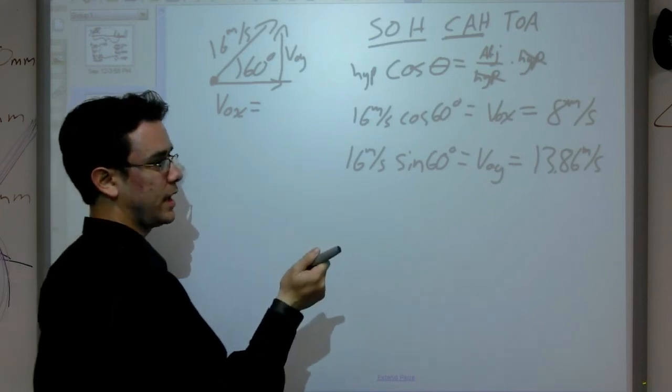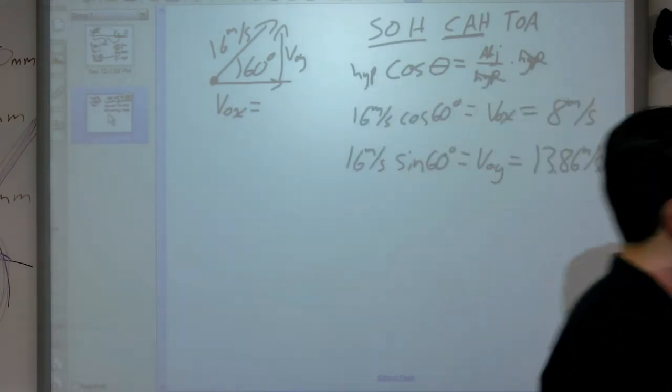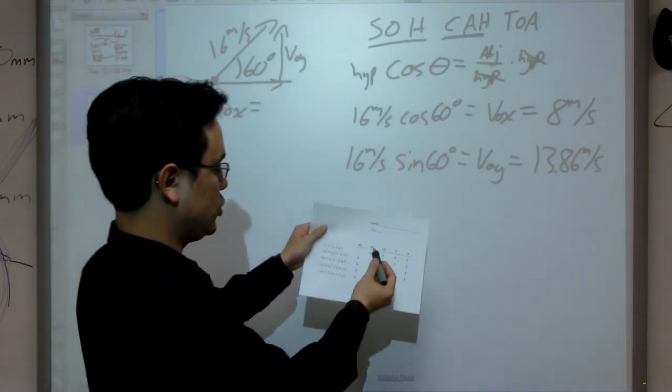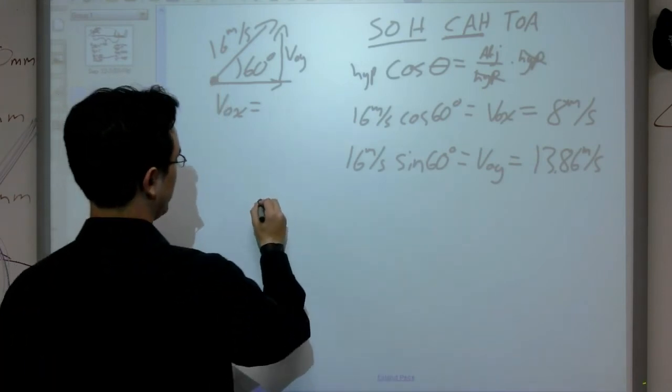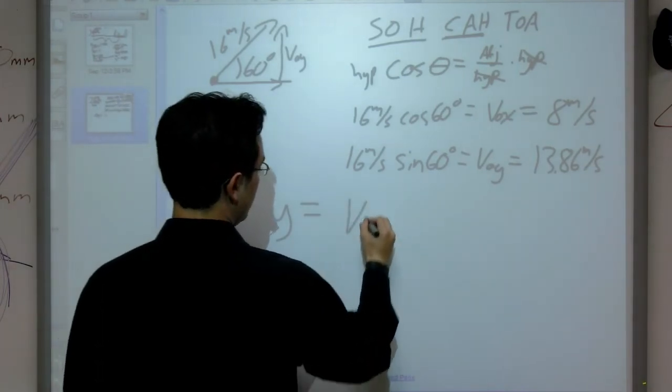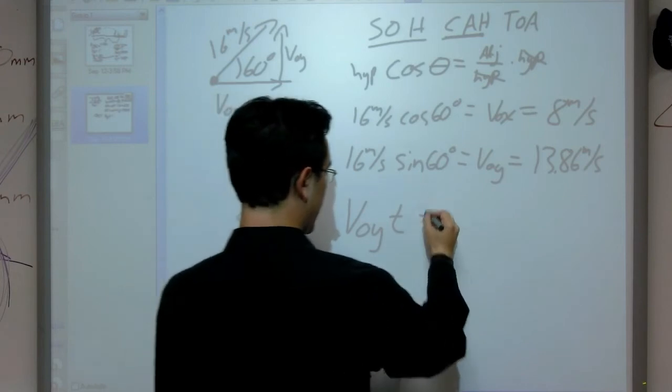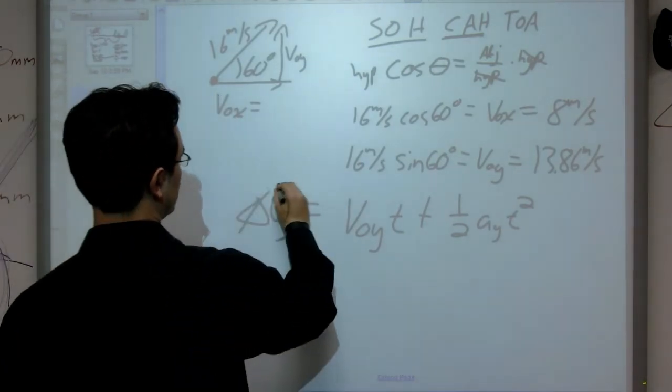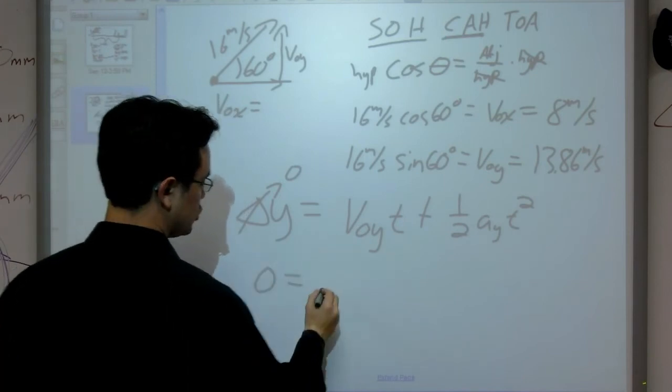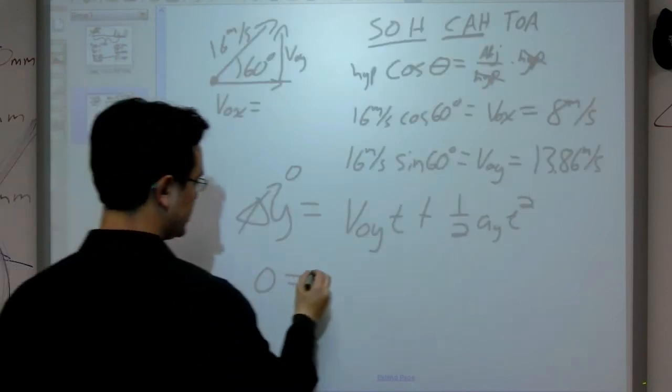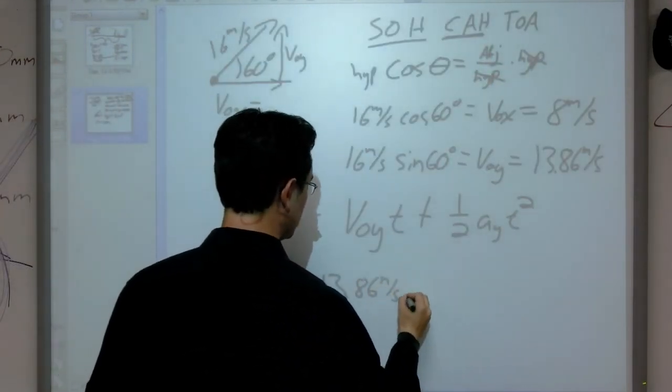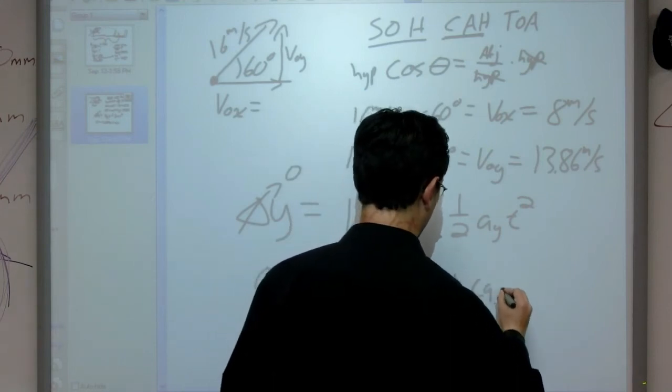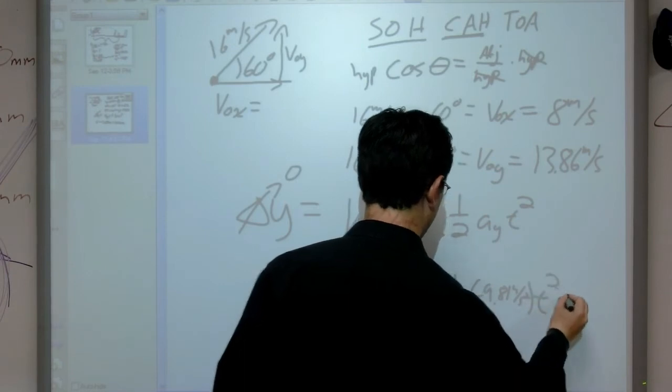The equation that I have to use is the one that doesn't have my final velocity in it. I look down my chart. It's missing from the second equation here. It's the very popular second equation. So, in this case, delta y equals our initial velocity in the y times time plus one-half a sub y t squared. If I start plugging in values, my delta y is equal to zero. My initial velocity, so I'm going to have zero equals initial velocity in the y was 13.86 meters per second times t plus one-half times a sub y is going to be one-half negative 9.81 meters per second squared t squared.